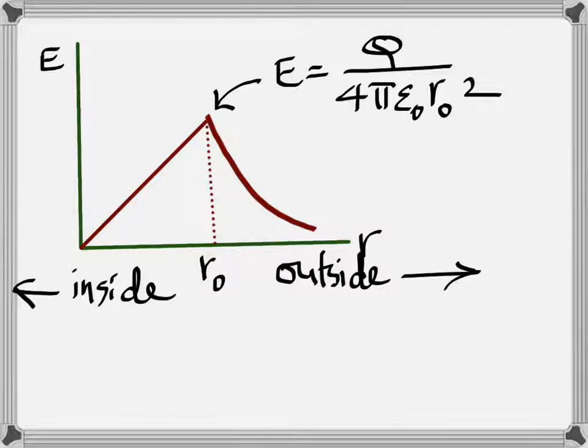And the graph is this way. Inside, it's a straight line. The maximum intensity is at the surface. And as you go on the outside, it is inversely proportional to the square of the distance. So it's parabolic. And it's not a straight line.